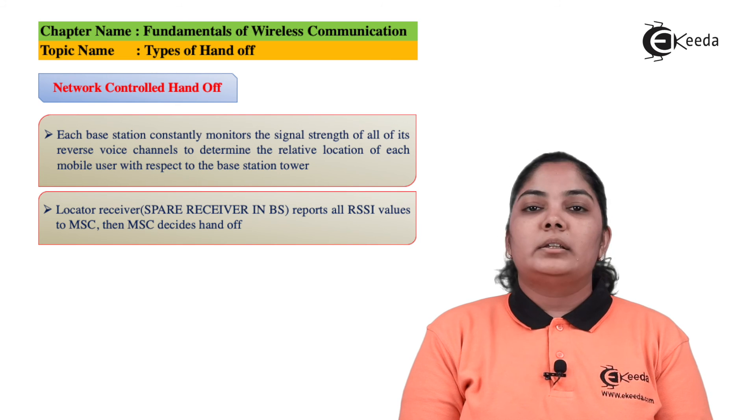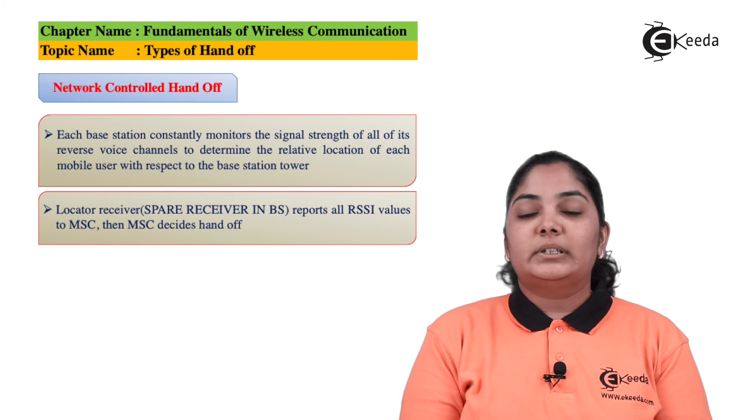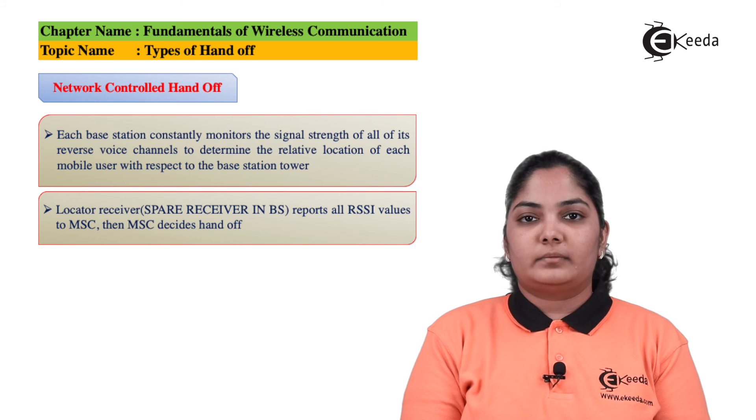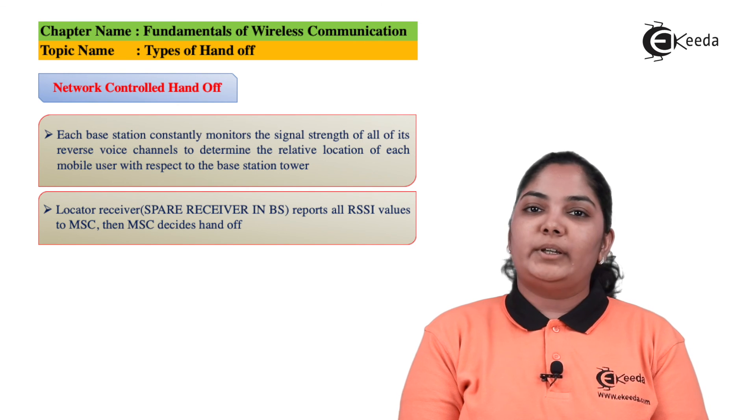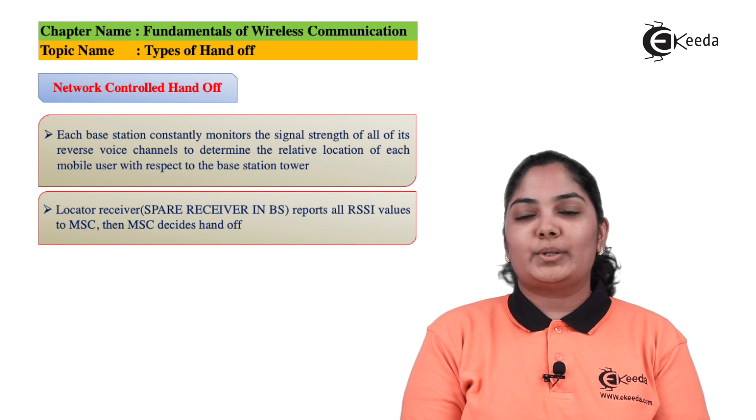Once it is identified that the power level of the mobile phone is below the minimum usable level, the locator receiver reports the RSSI values to the MSC, and then the MSC initiates the handoff request. This is how network controlled handoff takes place.